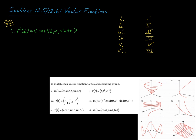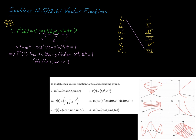For the first vector function, R of t is cosine 4t, comma t, comma sine 4t. Just as we did in question 1 part c, we can think in terms of parametric equations. So x is cosine 4t, y is t, and z is sine 4t.